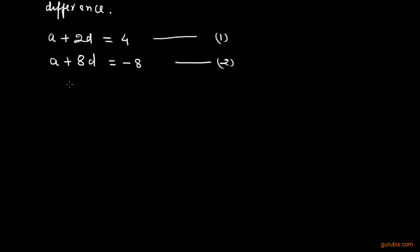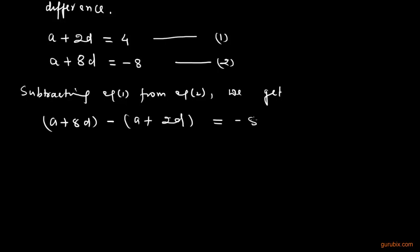So we shall solve these two equations to find out the value of A and D. So we shall subtract equation 1 from equation 2. Subtracting equation 1 from equation 2, what we get? A plus 8D minus A plus 2D, and we shall subtract 4 from minus 8. We get minus 8 minus 4, and this is equal to minus 12.